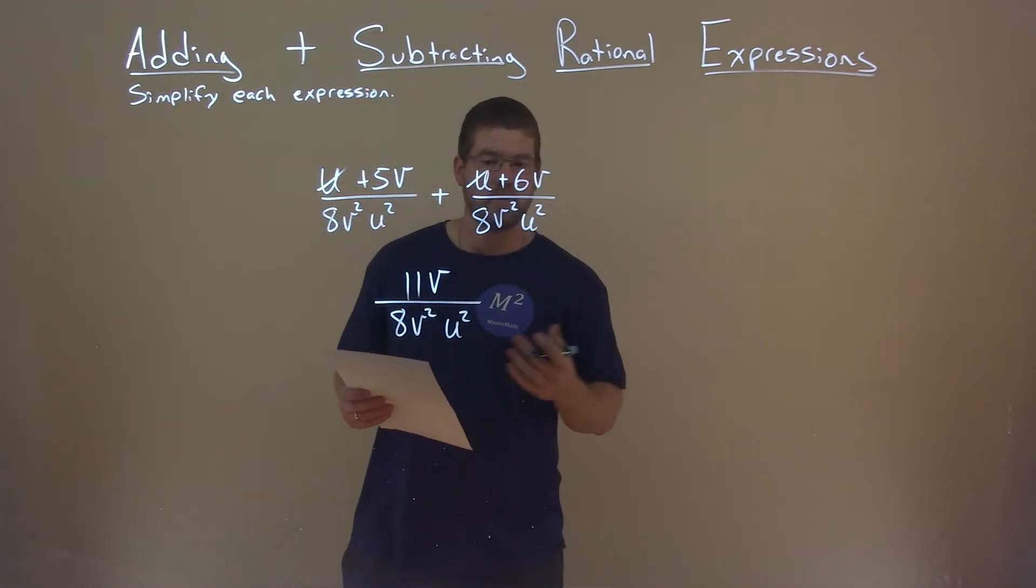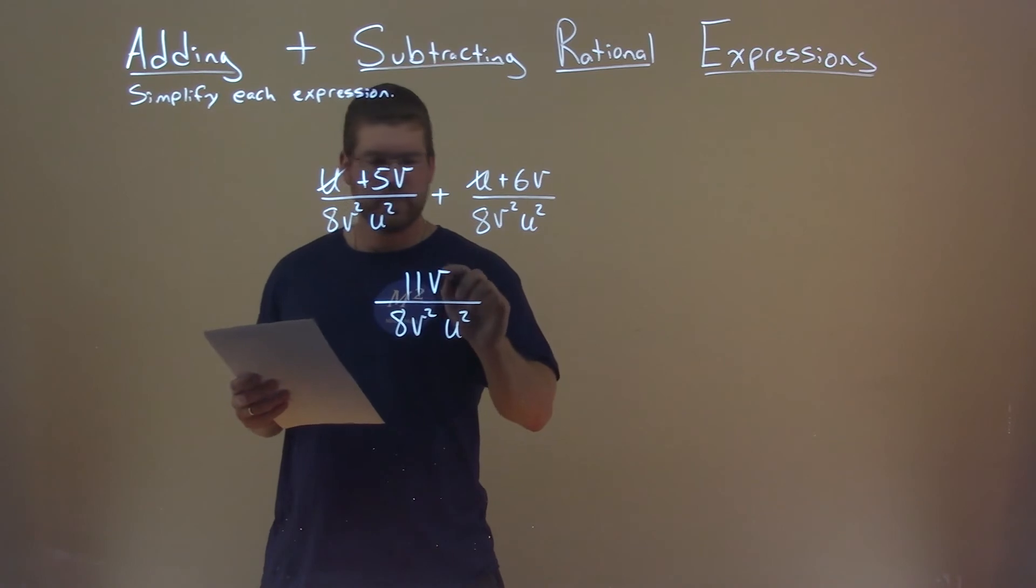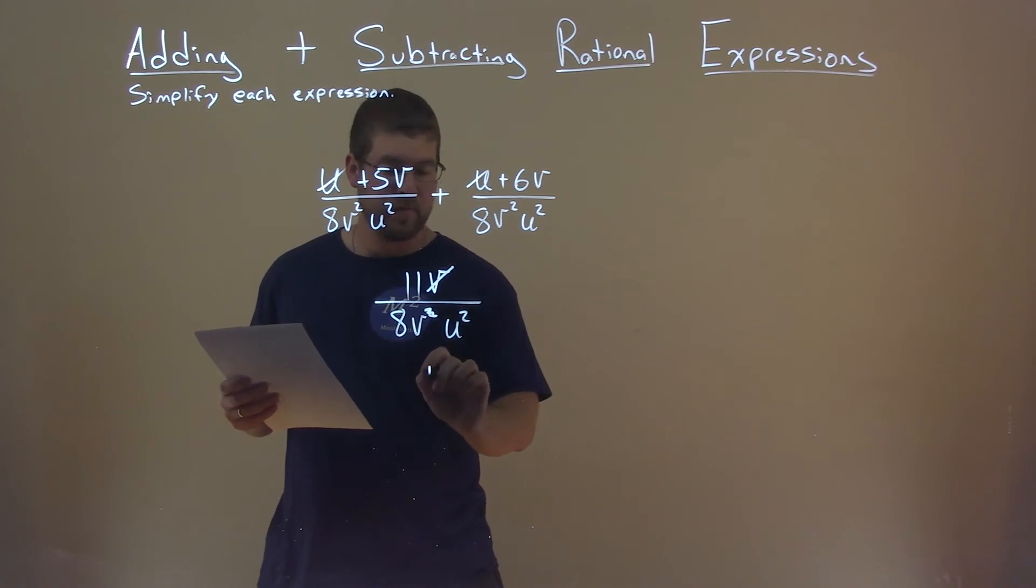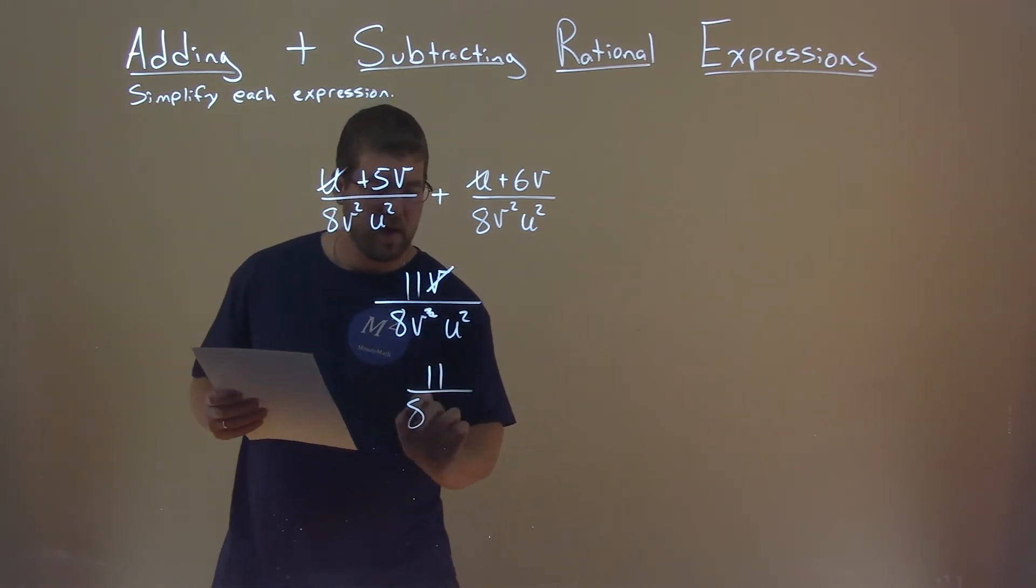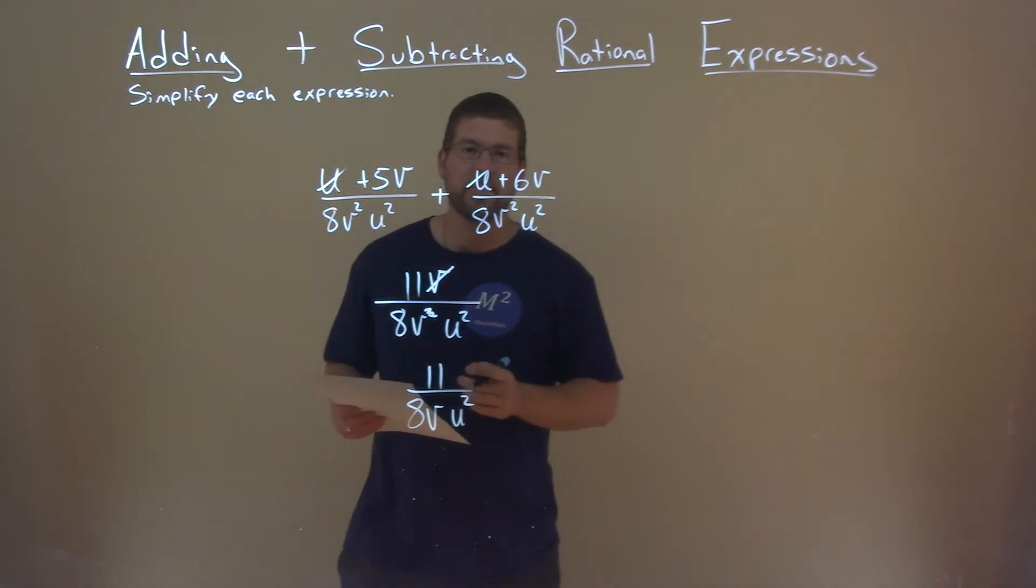So now how else can we simplify? Well, there's a v squared in the denominator and then a v in the numerator. So we cancel one of them out, cancel the square. And that's basically it. We just simplified here. We have 11 over 8v u squared. And that is our final answer.